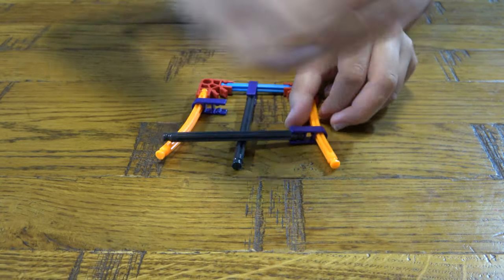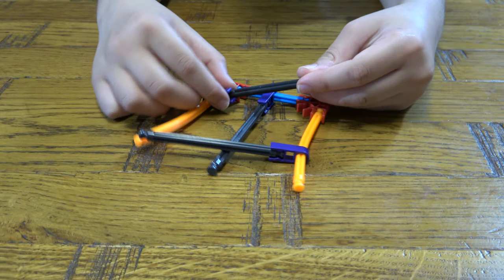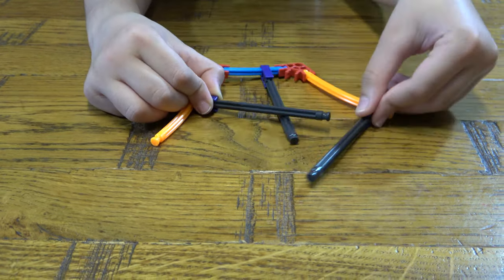Then you get two of these like this. Then you put these onto here and you bend them.